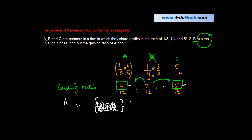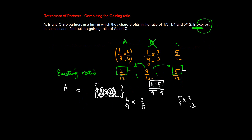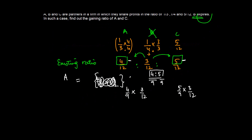The sharing has to be in the ratio of 4:5, and 4:5 is what? 4/9 : 5/9. So A will get 4/9 of B's share and C will get 5/9 of B's share.